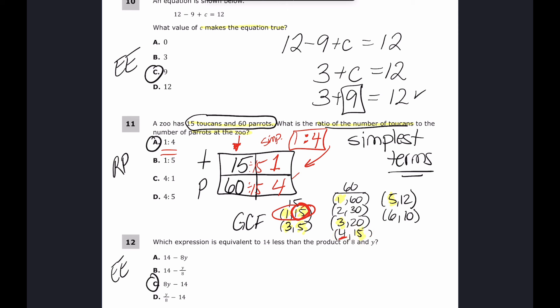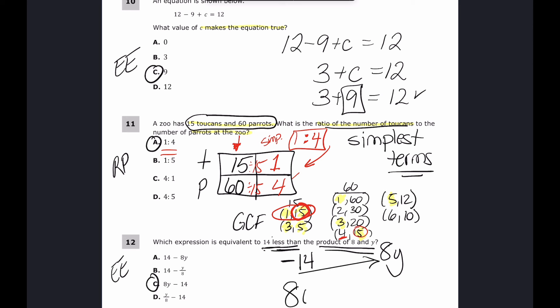For number twelve: which expression is equivalent to '14 less than the product of 8 and y'? The product of 8 and y is simply 8y. Then 14 less than that gives us 8y minus 14. The common mistake is flipping it to 14 minus 8y because we read left to right — that's the distractor. The answer is C.